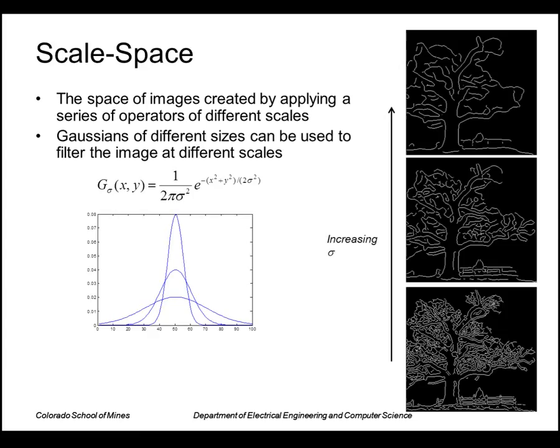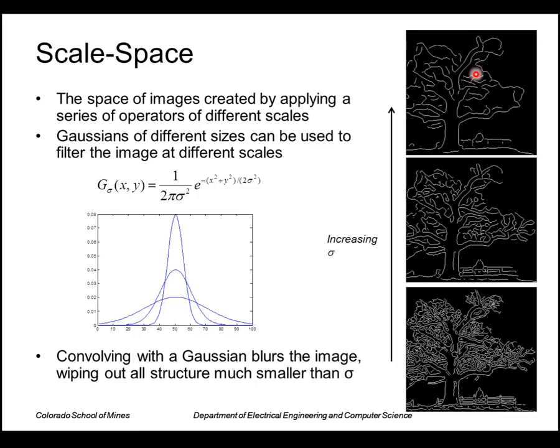A Gaussian is a good choice for this operator because it has a tunable parameter sigma, such that if we make sigma small, the Gaussian is narrow. If we increase sigma, the Gaussian gets bigger. So we'll see how these are produced in just a minute. But these are edges produced by a Gaussian-based operator. And as we increase sigma, we essentially only detect large structures. We essentially wipe out all structures much smaller than sigma.